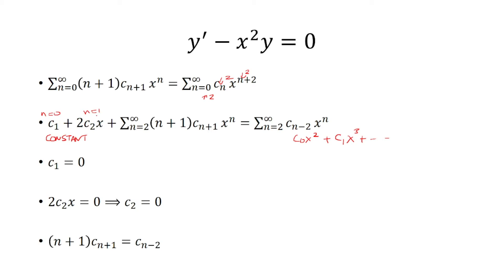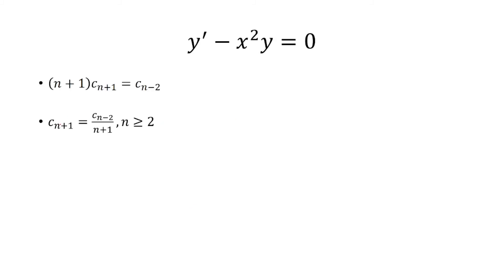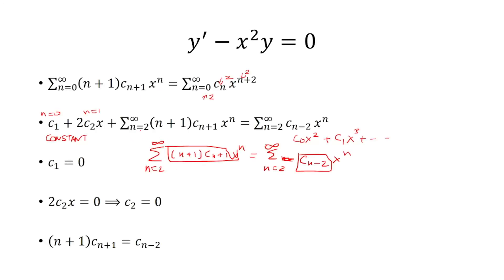Getting rid of those two zero terms, we basically have the sum from n equals 2 to infinity of n plus 1 times c sub n plus 1 times x to the n, equals the sum from n equals 2 to infinity of c sub n minus 2 times x to the n. Setting the insides equal to each other, ignoring x to the n: n plus 1 times c sub n plus 1 equals c sub n minus 2. Solving for c sub n plus 1, this works for n greater than or equal to 2.